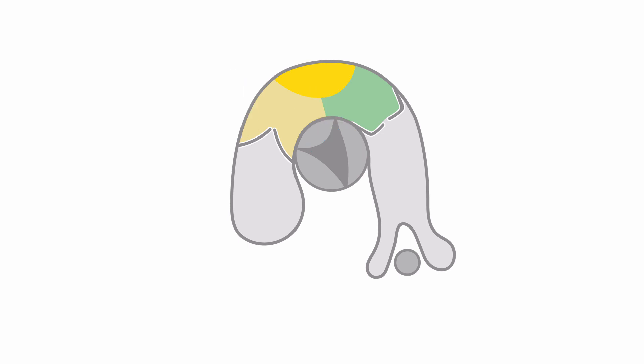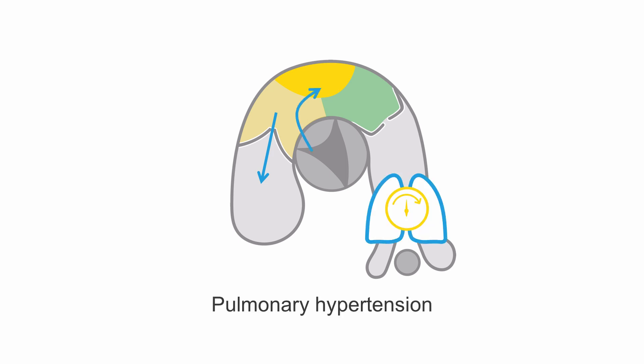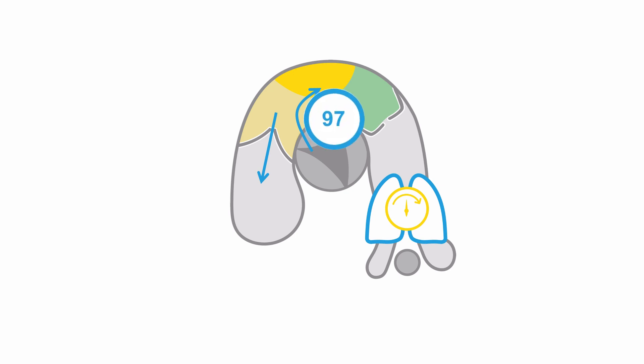So now we have a high tricuspid regurgitation velocity and a low velocity ventricular septal defect, which both suggest pulmonary hypertension. However, we know there is an intracavity gradient, so these parameters do not reflect pulmonary pressure in this case. You can see how important it is to evaluate the gradient properly.